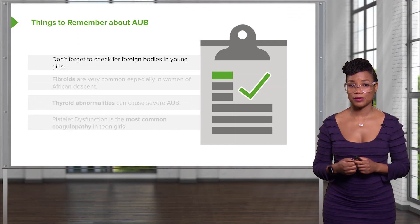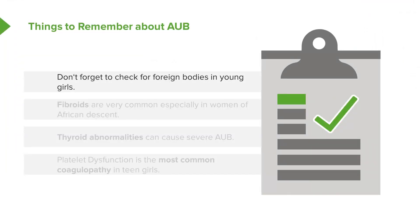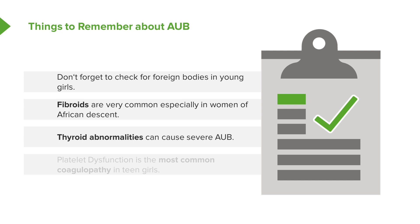Let's remember some things about AUB. Don't forget to check for foreign bodies in young girls — the most common foreign body recovered is toilet tissue. Fibroids are very common, especially in women of African descent, so don't forget to consider fibroids in women of African, Caribbean, or African American descent. Thyroid abnormalities are also a possibility with severe AUB, and a TSH should always be checked. In young girls, platelet dysfunction is the most common coagulopathy — don't forget to ask about a history of bleeding after surgery, with brushing teeth, or after cutting yourself.